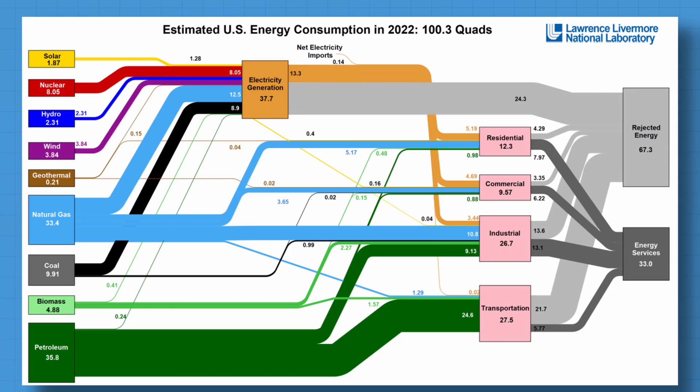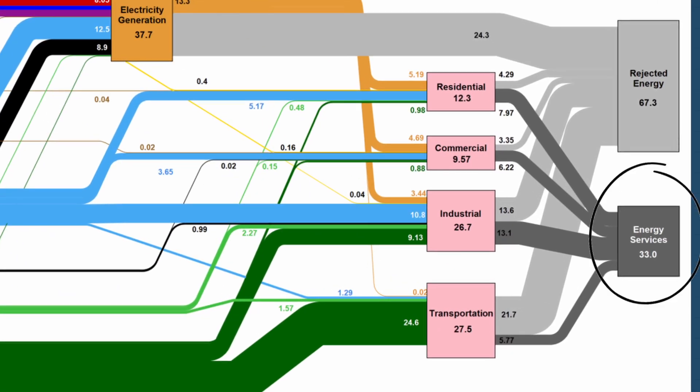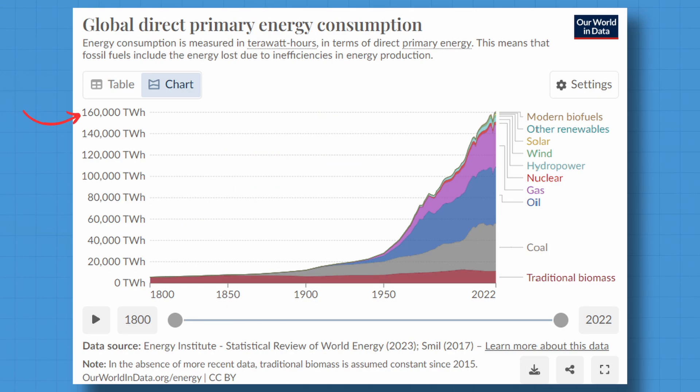So the primary energy fallacy is the assumption that all primary energy from burning fossil fuels needs to be replaced with renewables. It doesn't. What needs to be replaced is the energy that provides us with energy services. And since most rejected energy comes from fossil fuels, we essentially don't need to replace the insane amount of primary energy with renewables. Knowing this matters because graphs like these can be used to inflate the importance of fossil fuels and paint a picture that it's impossible to replace fossil fuels with renewables.